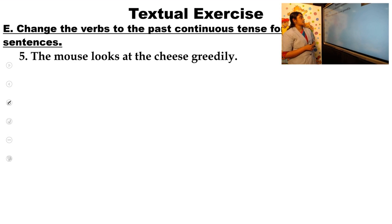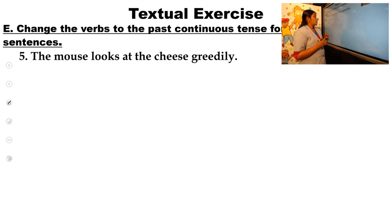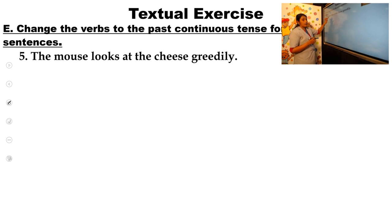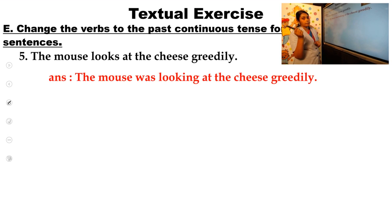Fifth question: 'The mouse looks at the cheese greatly.' The mouse is a singular noun and 'look' is the main verb. So we use 'was' plus look plus ing: 'was looking'. The answer is: the mouse was looking at the cheese greatly.